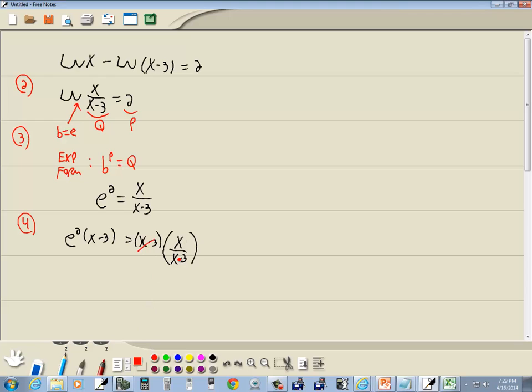When we do that, these x minus 3's cancel. Over here, I use the distributive property. e squared times x is e squared x. e squared times negative 3 is negative 3 e squared equals x.